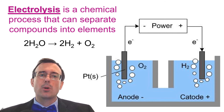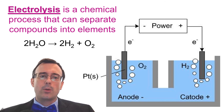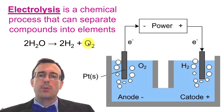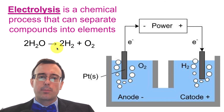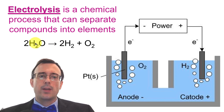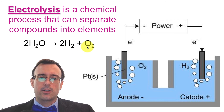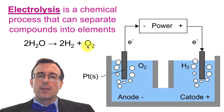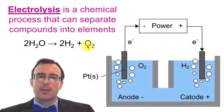Electrolysis is a chemical process that can separate compounds into elements. For example, you can separate water into hydrogen and oxygen by putting electricity through the water — that electricity is able to break apart the bond between hydrogen and oxygen and enable them to separate out into hydrogen and oxygen. Remember that electrolysis is a chemical process, and only chemical processes can separate compounds into their elements.